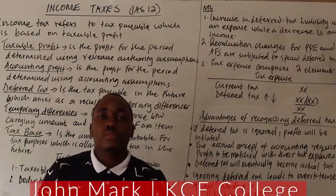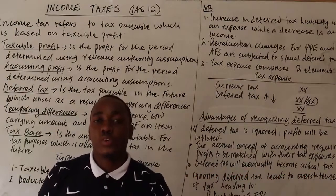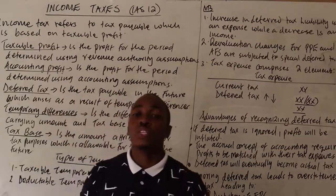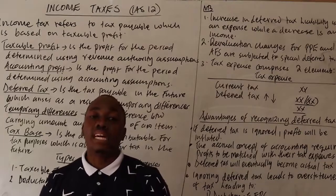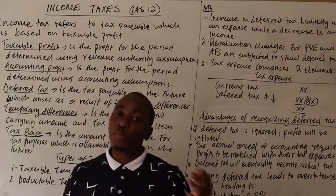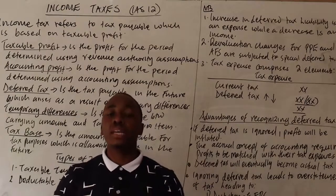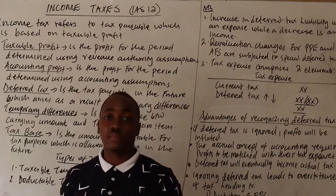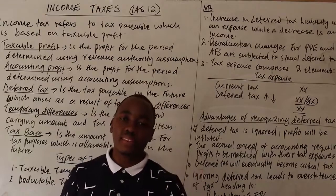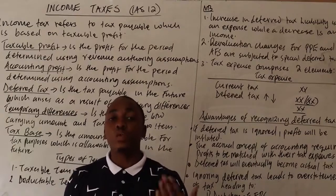Welcome to today's AFL session. Today we cover IAS 12, which deals with income taxes. Income taxes are taxes based on taxable profit. We need to understand the difference between taxable profit and accounting profit. Taxable profit is the profit for the period determined using revenue authority assumptions — that's why we have allowable, disallowable, taxable, non-taxable items.